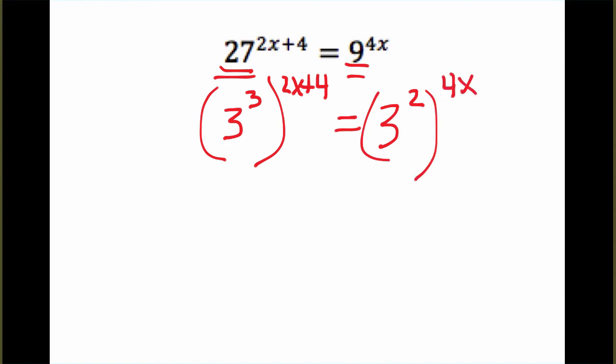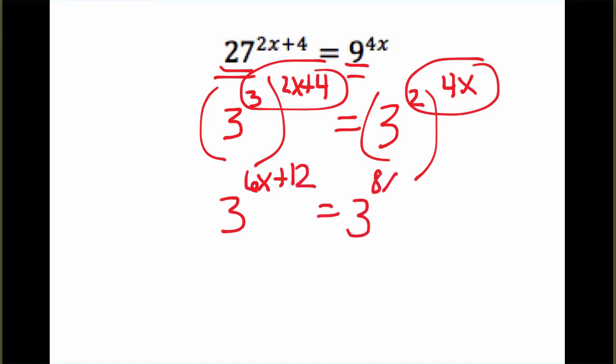Just like on the previous, I want to combine these exponents. Power to a power means we multiply. So this will become, you have to distribute this 3 to each part. So 6x plus 12. And then on the right, we just get 8x.